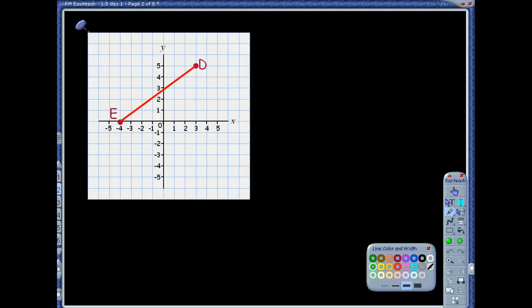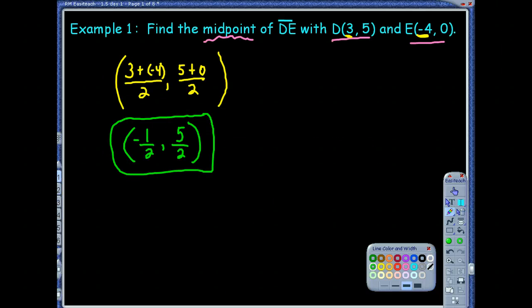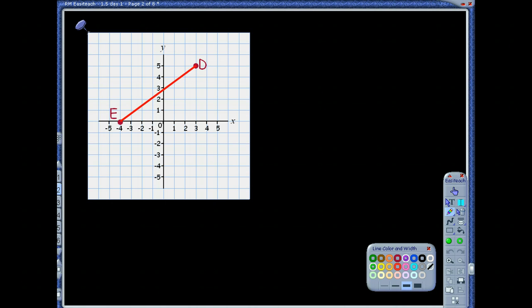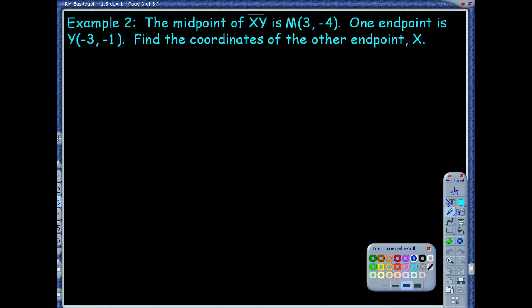Now just real quick before we move on to the next example, you don't have to draw a picture, but a picture's always nice to kind of get a visual. So our coordinate was negative 1.5 and 2.5. If I graph that in a coordinate plane, negative 1.5 would be to the left about here, and then 2.5 would be up about here. And there's our midpoint. It looks pretty good. You don't have to do this. This is just more of a checking purposes.